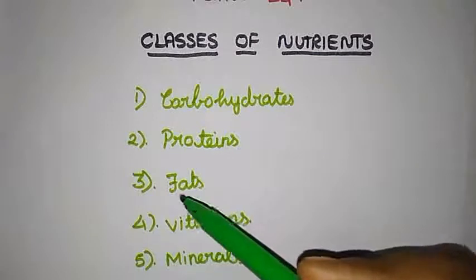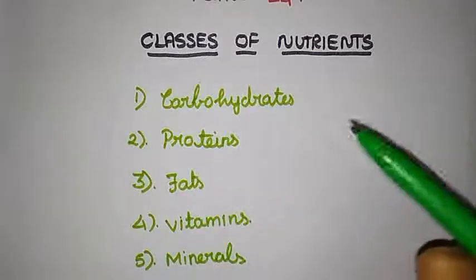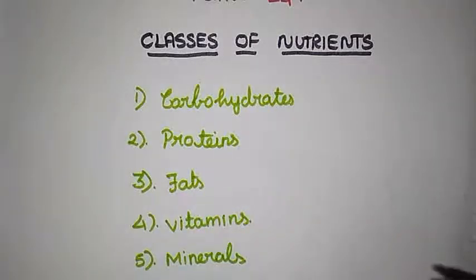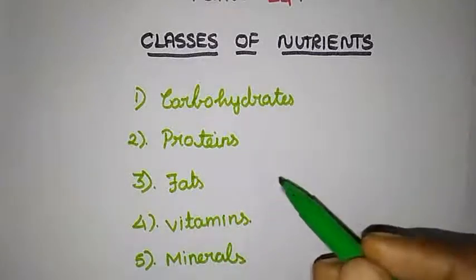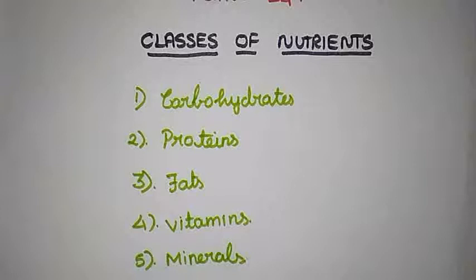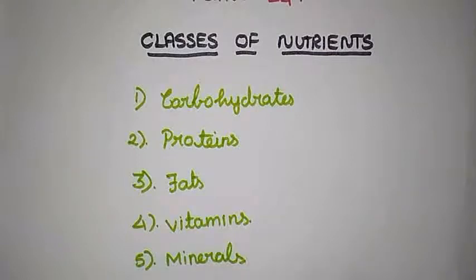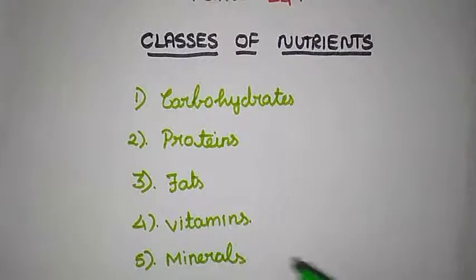And next one: fats. Cheese and nuts are contained in fats. And next one: vitamins. Vitamin-containing food items include carrots, oranges, spinach, and sweet potatoes — these are all vitamin-content foods. And minerals: mushrooms, shellfishes, nuts, and seeds — these are all mineral-content foods.